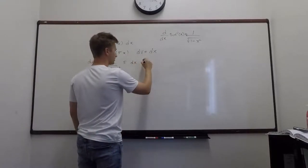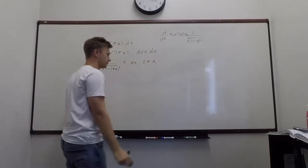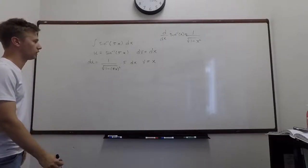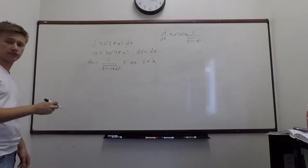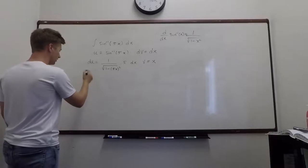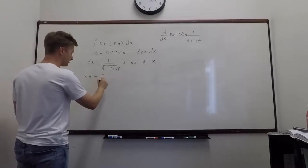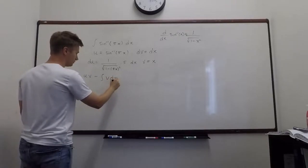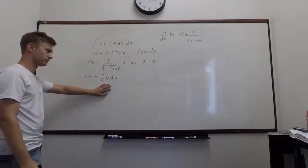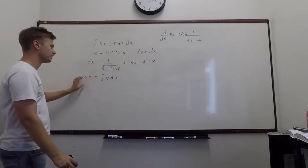dv equals dx, so therefore v is equal to x. Okay, so now you have everything you need, so throw it into the formula. The formula for integration by parts is uv minus integral of vdu. Okay, so this is the integration by parts formula. So throwing everything into that.